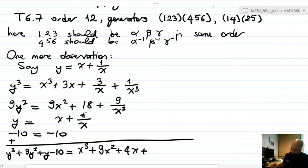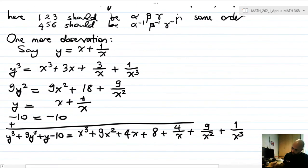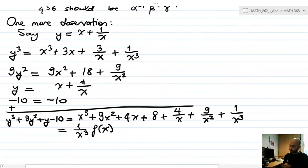Then you have 4x here, plus 8 plus 4 over x, plus 9 over x squared, plus 1 over x cubed, which is precisely 1 over x cubed times f of x.